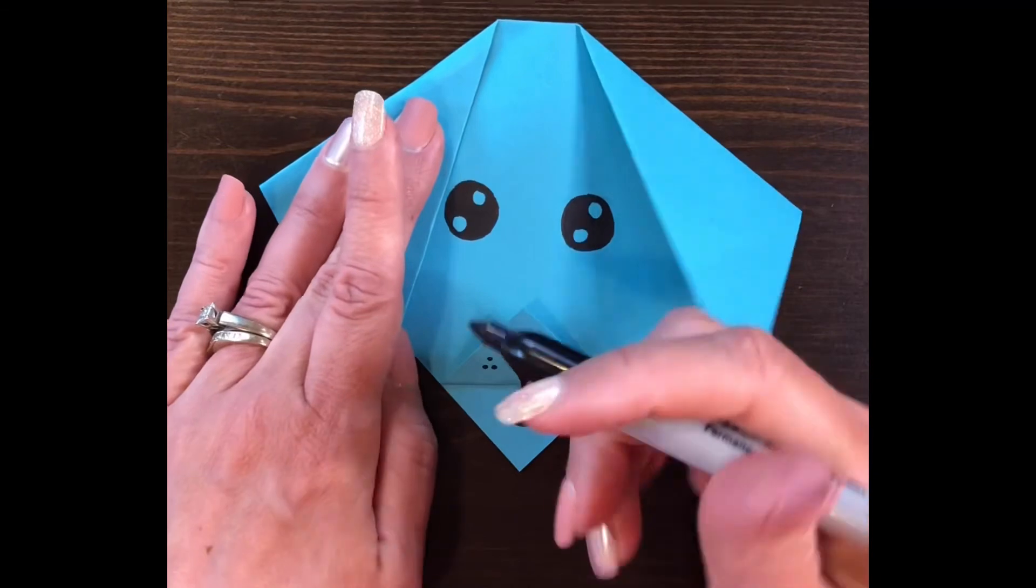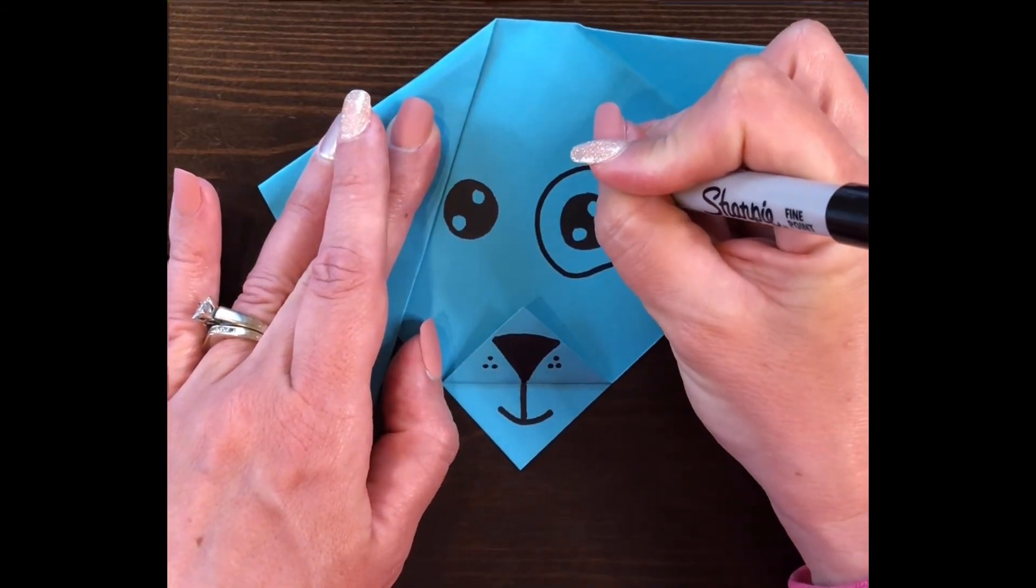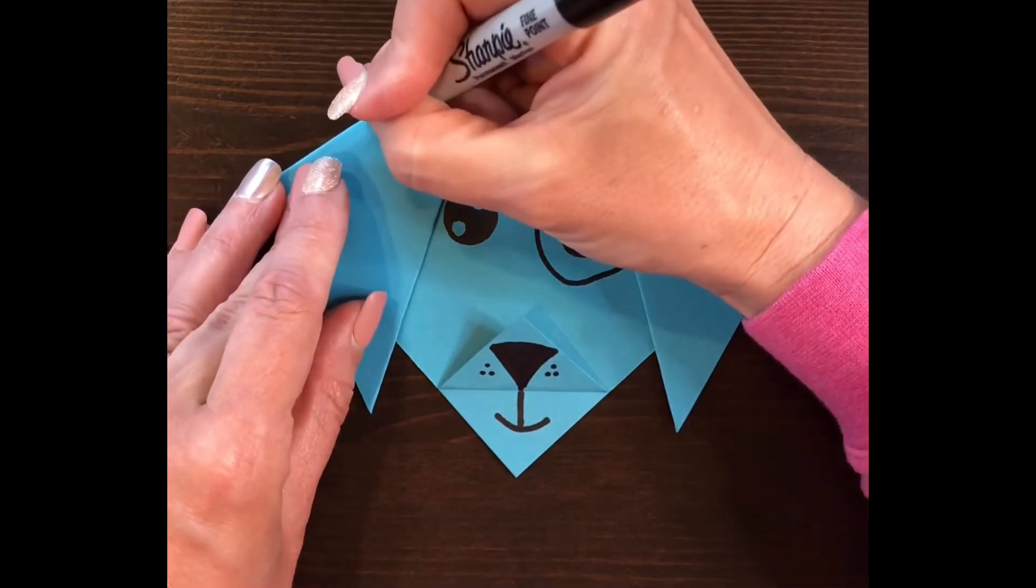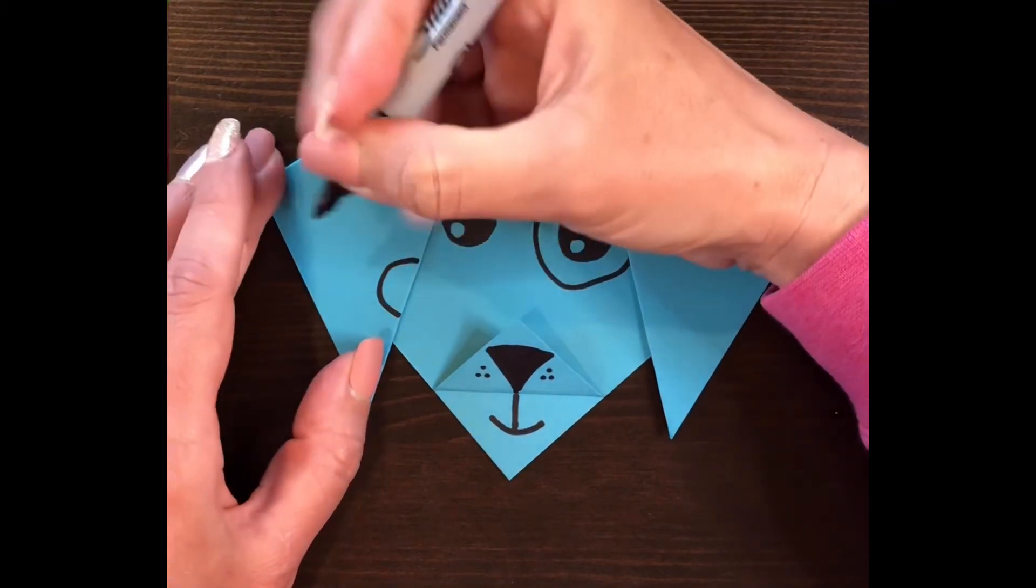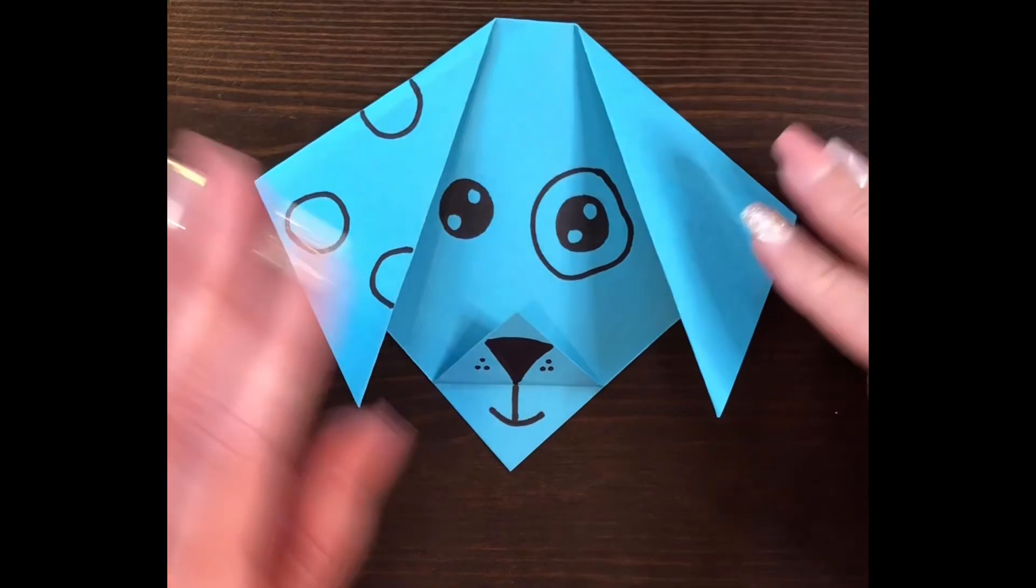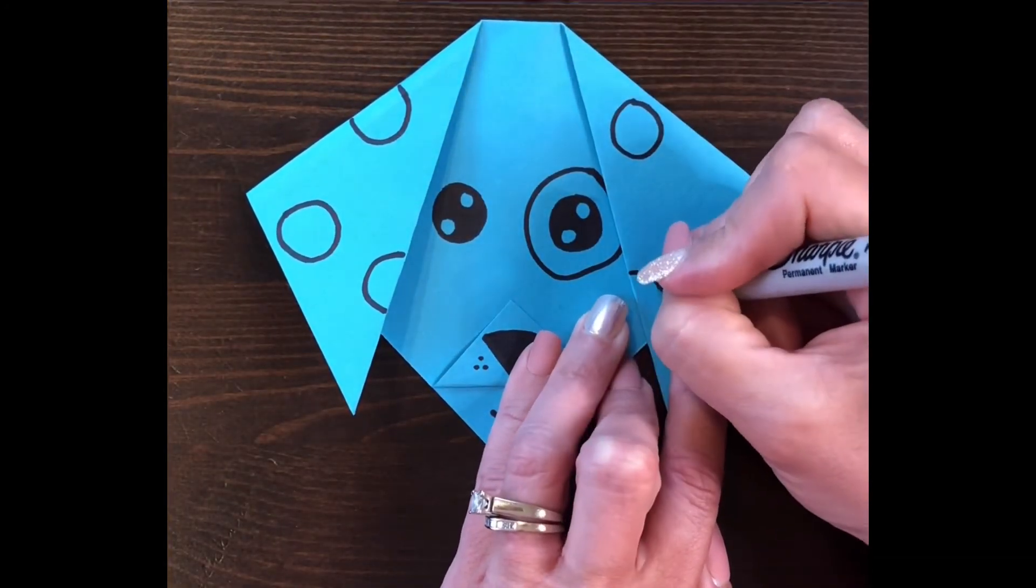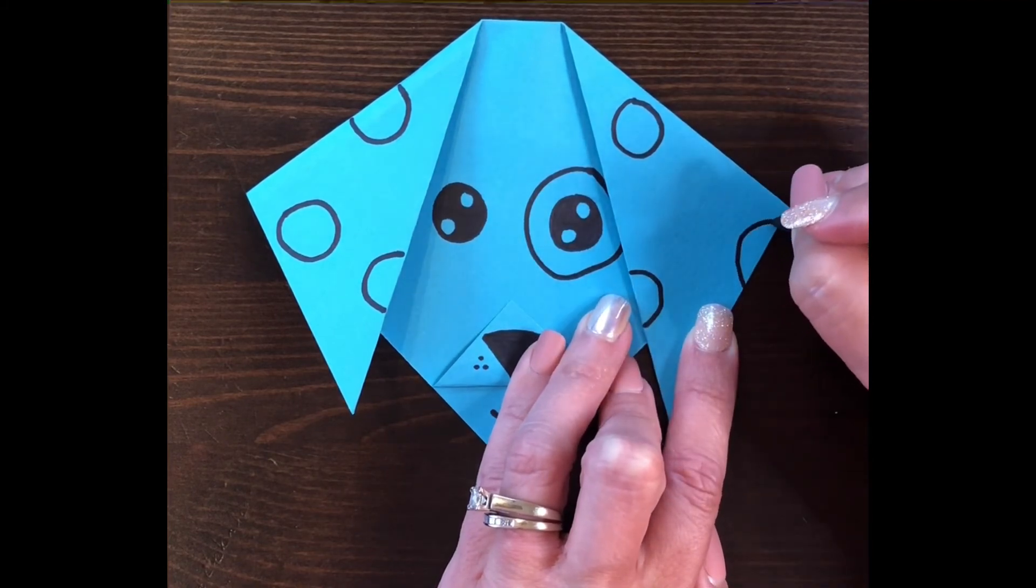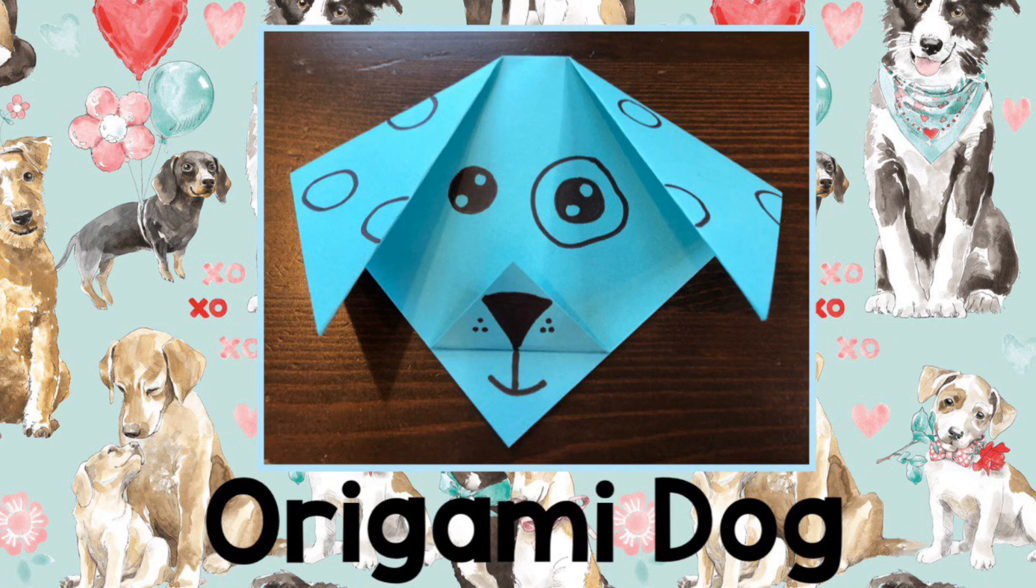You could give him a circle around his eye if you wanted. You could do little spots on the ears. You could blend in with your fingers.